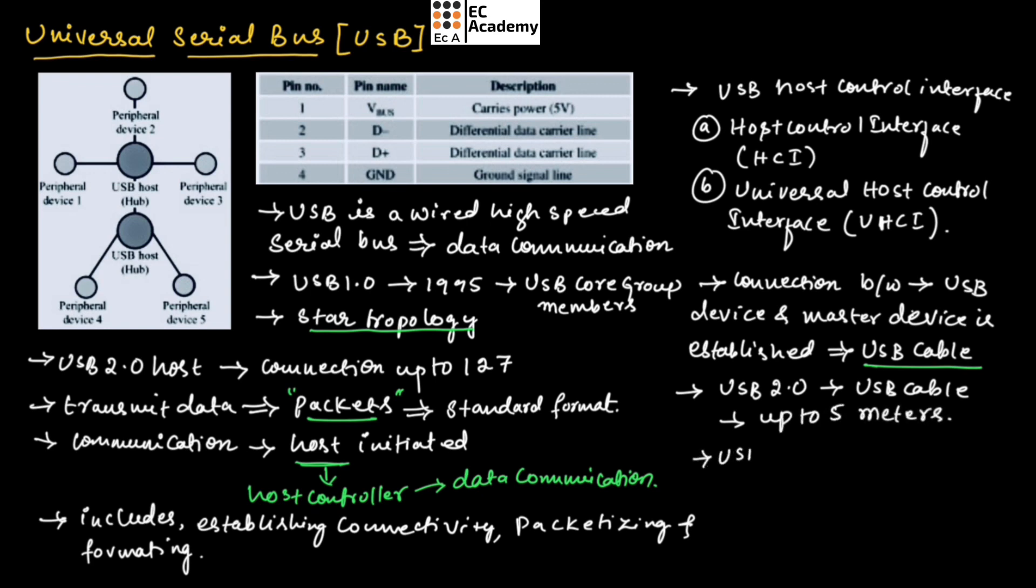USB 2.0 uses two different types of connectors at the end of the USB cable for connecting USB peripheral device and host device. These two connectors are Type A and Type B connectors.